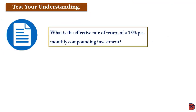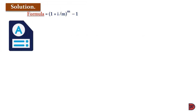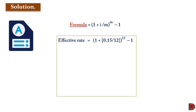Let's test our understanding. What is the effective rate of return of a 15% per annum monthly compounding interest? Because it's monthly, the number of compounding periods is 12. We apply the formula: 1 plus i divided by m, all raised to the power m, minus 1. The effective rate will be 1 plus 0.15 divided by 12, raised to the power 12, minus 1.